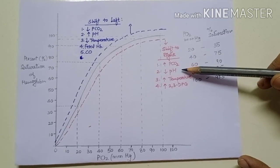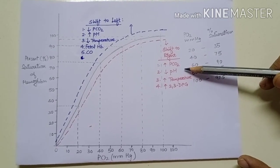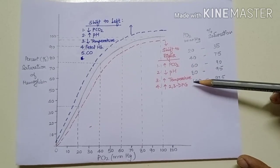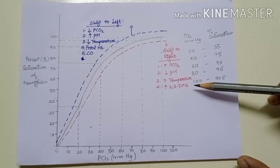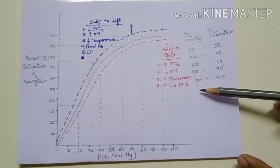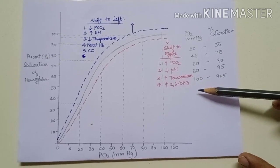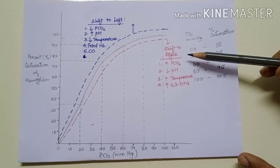Also decrease in pH or increase in H+ concentration, increase in temperature, and increase in 2,3-diphosphoglycerate, which is the product of glycolysis. These all factors cause shift of the curve to the right side.